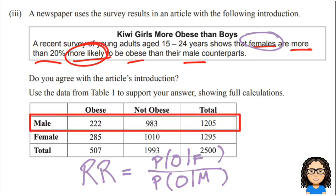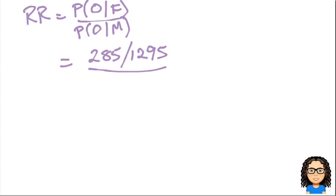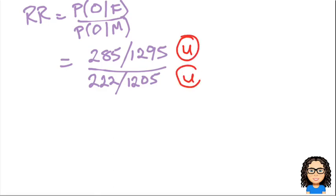Now looking at the males row: there are 1205 males, and 225 of them are obese. So the probability of being obese given male is 225 out of 1205. Getting either of those probabilities on its own would get you towards Achieved.